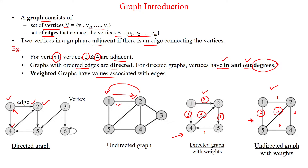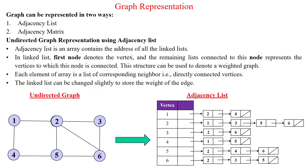We can calculate the degree of each and every vertex based upon the incoming and outgoing edges. The graph can be represented using two approaches: one is the adjacency list, and another one is the adjacency matrix.